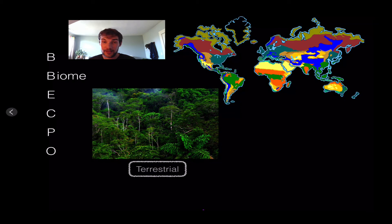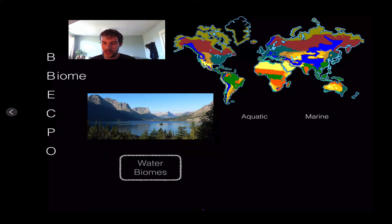Water biomes have different types: aquatic versus marine. Aquatic is freshwater and marine is saltwater. This picture shows a freshwater biome, which could include...